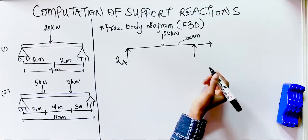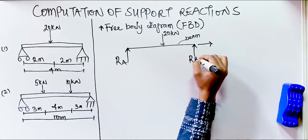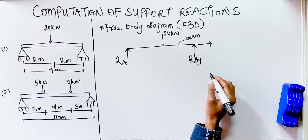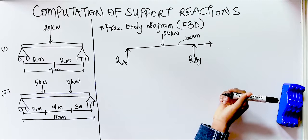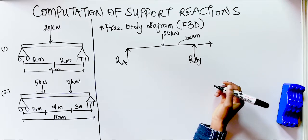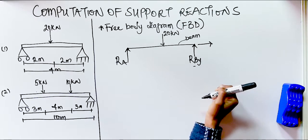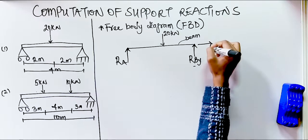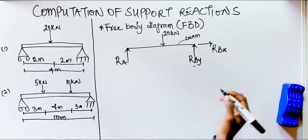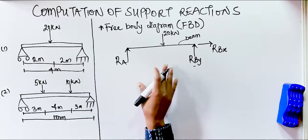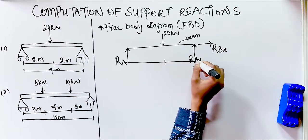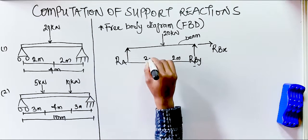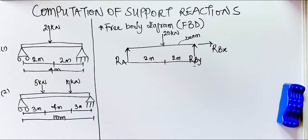All supports are assumed to be in tension unless proved otherwise. We draw support A with reaction Ra. For the other end, since the hinge has two reactions, we have the vertical reaction Rby — where Y represents vertical — and the horizontal reaction Rbx. The roller gives one reaction and the hinge gives two. The span is 4 meters, divided into 2 meters and 2 meters. This is what we call the free body diagram.